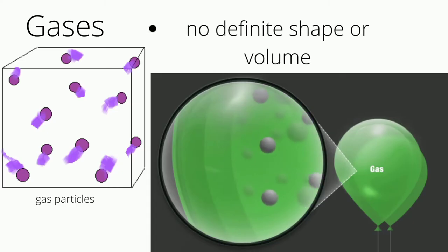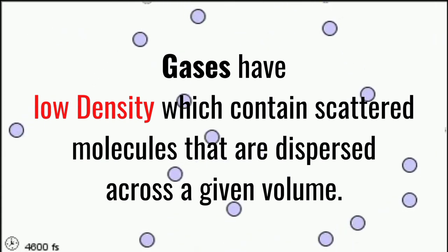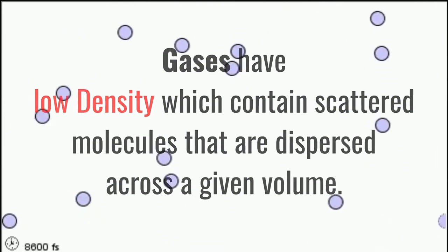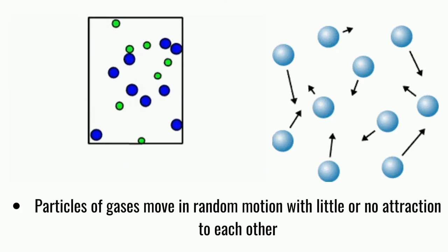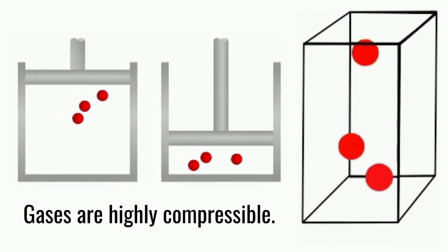Gases have no definite shape or volume. Gas is the state in which matter expands to occupy the volume and shape of its container. Gases have low density which contain scattered molecules that are dispersed across a given volume. Particles of gases move in random motion with little or no attraction to each other. Gases are highly compressible.